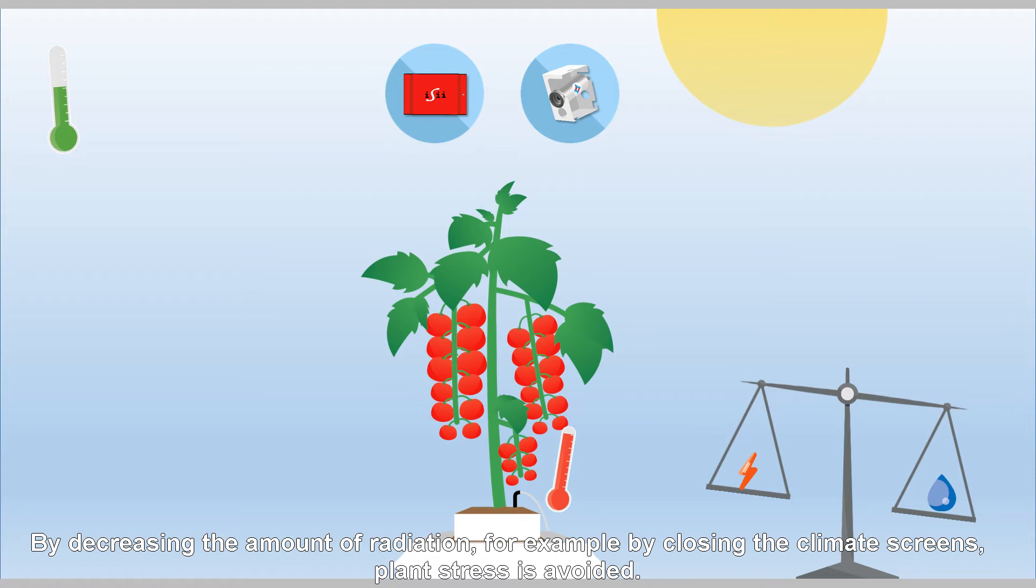By decreasing the amount of radiation, for example by closing the climate screens, plant stress is avoided.